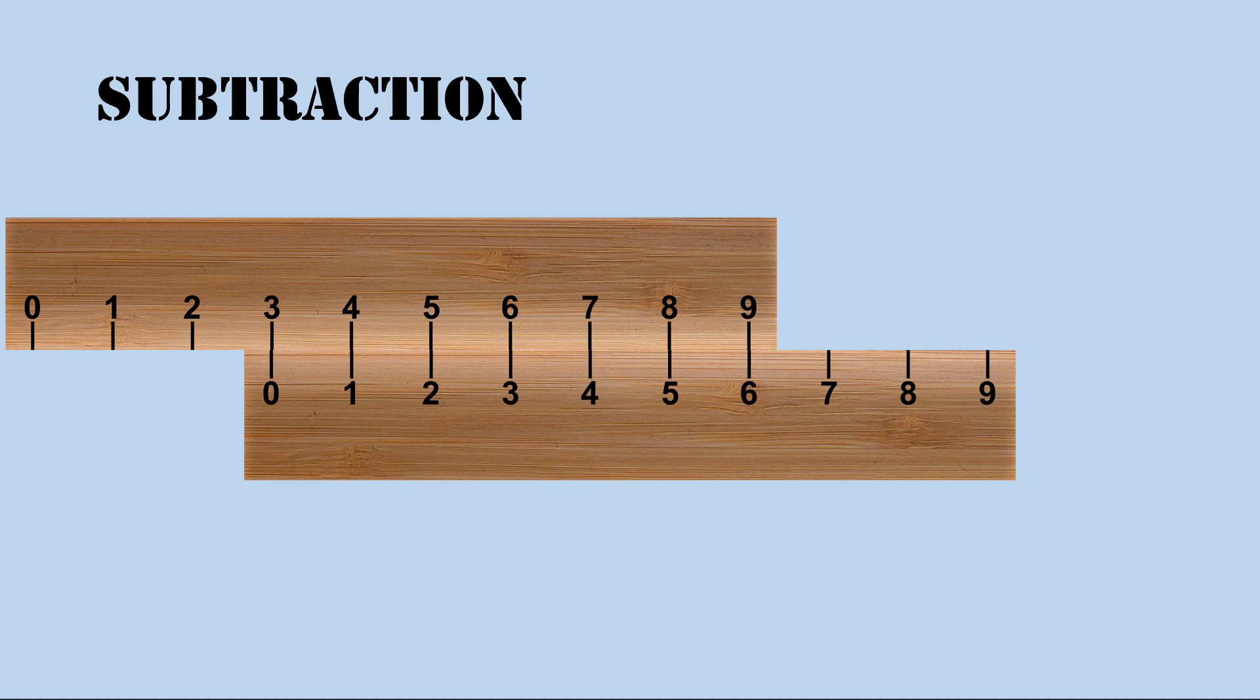With the same relative position of the two scales you have also solved 5 minus 2 equals 3, 6 minus 3 equals 3, 7 minus 4 equals 3, 8 minus 5 equals 3, and 9 minus 6 equals 3.